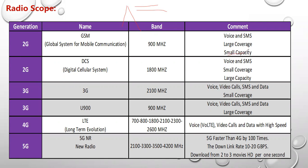But why small capacity? Because this small frequency can only be divided into a few channels. It's like dividing something one meter long into 10 pieces versus something 10 centimeters long. So large coverage means a big coverage area because frequency is inversely proportional to wavelength, but small capacity means fewer users because it is a small frequency. This is GSM.